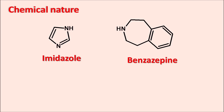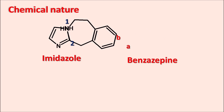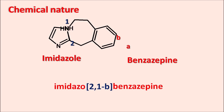Where is the point of fusion? We can give the numbering to the imidazole — position one and position two. Similarly, we can label the sides of the benzazepine: this is the A side and this is the B side. Now the benzazepine is fused with the imidazole such that positions one and two of imidazole are fused with the B side of the benzazepine. We can write this as imidazo-benzazepine with fusion between the first and second position of imidazole and the B side of the benzazepine, represented as 2,1-B.